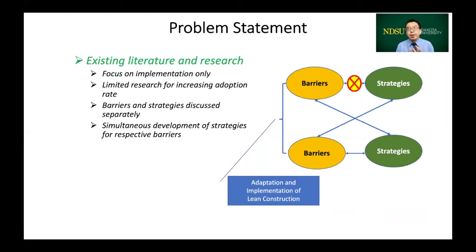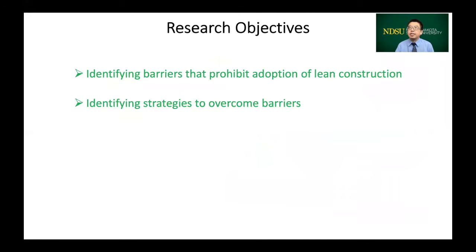thereby leaving a gap where strategies in overcoming the respective barriers are not discussed comprehensively. Therefore, we believe simultaneously developing strategies to overcome the respective barriers will help the construction industry adopt and implement lean construction more efficiently. In order to address the research gap, two research objectives are established. The first is to identify barriers that prevent adoption of lean construction, and the second is to identify strategies to overcome barriers.